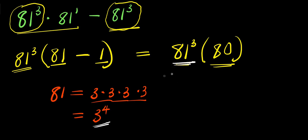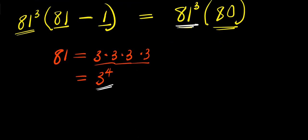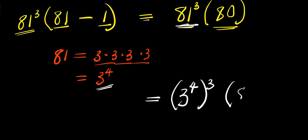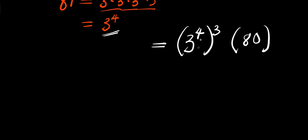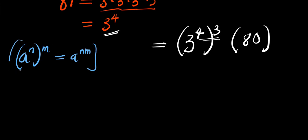So what I am going to have will be this equals 3 to the power of 4, which is this 81. So let's make use of this identity: if you have a to the power of n, raised to the power of n, this equals a to the power of n times n. So from here we have 3 to the power of 4 times 3, this is 12, times 80.